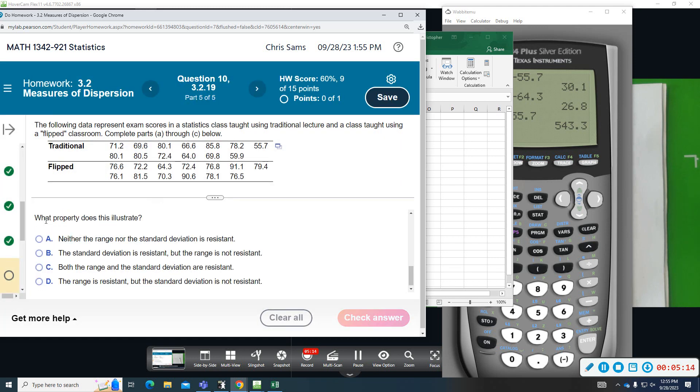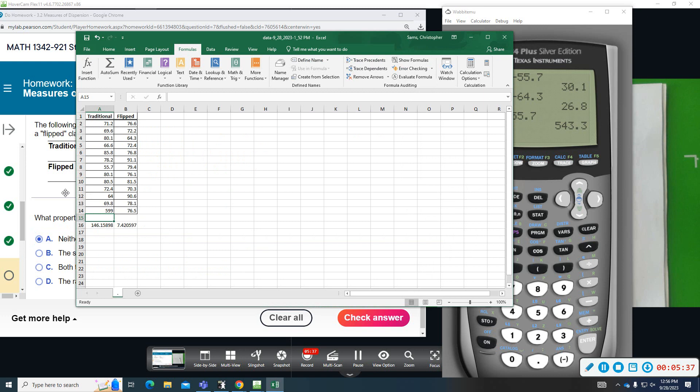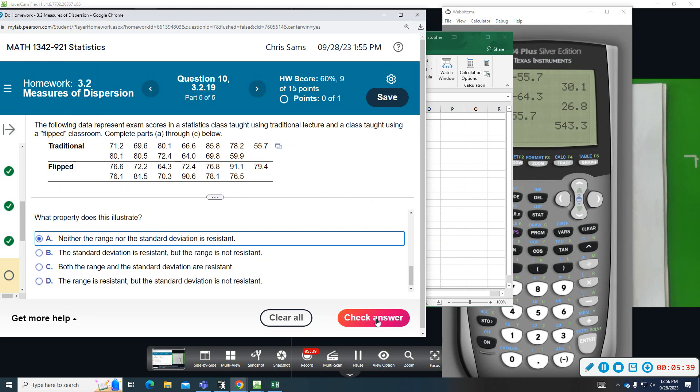And then what property does this illustrate? Neither range nor standard deviation is resistant. The standard deviation is resistant but the range is not. Both range and standard deviation are resistant. The range is resistant but the standard deviation is not. Neither one of those measurements are resistant to an outlier. They both change very dramatically when we change the value.